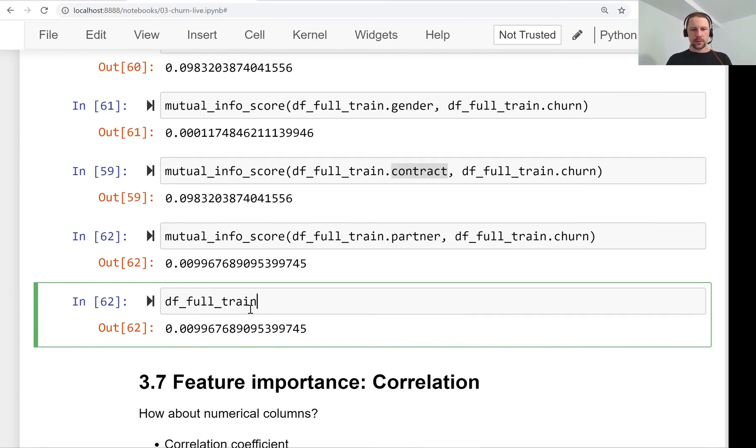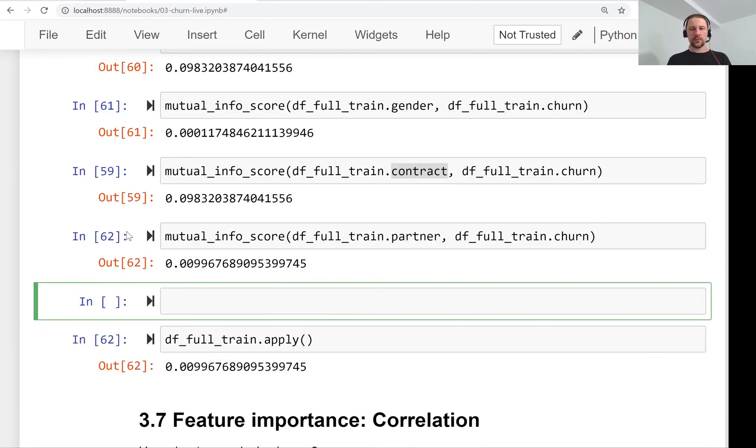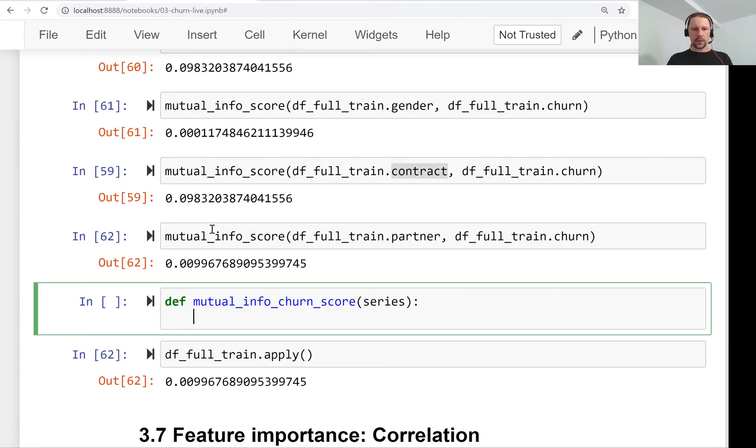For that, we'll use this function called apply. Apply takes in a function with one argument, and this mutual information has two arguments, so we actually need to wrap it into a function with just one argument. Let's call it mutual_info_churn_score. Here we pass a series and return—we apply this series, pass it to mutual information score function, and here we keep the second argument as churn.